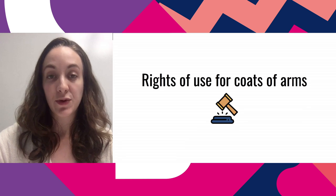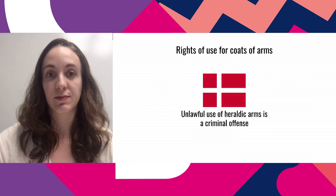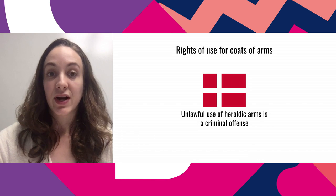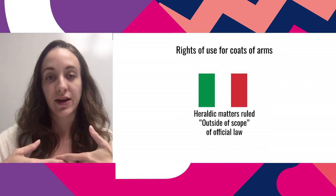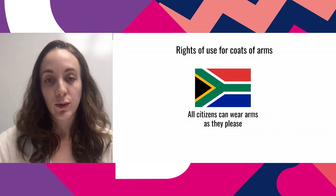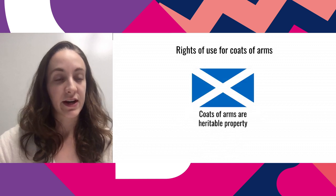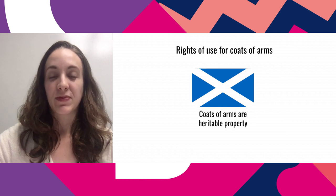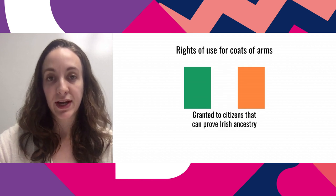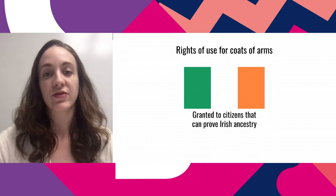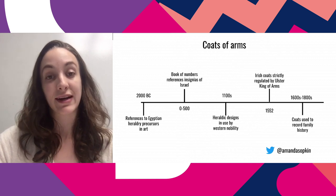Rights of use for coats of arms are interesting. In Denmark, any unlawful use of heraldic arms is a criminal offense. In Italy, heraldic matters were ruled outside the scope of official law, and similarly in South Africa, all citizens can wear arms as they please — a more flexible approach. In Scotland, coats of arms are considered heritable property, so you might inherit both the family farm and the family coat of arms. In Ireland, if you can trace back your ancestry, you can be granted the rights to a coat of arms.